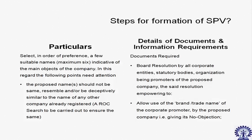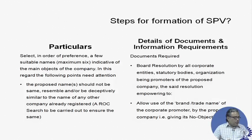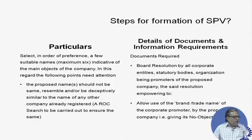If you look at my PowerPoint slide you will find that on one side I have written the particulars and on the other side I have written the details of the document and information required. I am going to talk about both, but first I will discuss the particulars and then I will say what supporting documents you require. The first thing you need to do is have a name for your company or special purpose vehicle, and for that you need to have a suitable mix of six names.